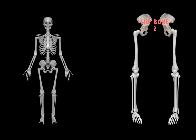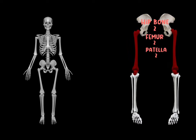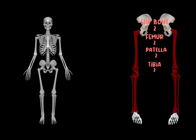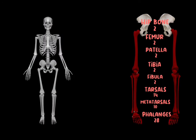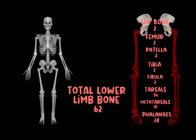Now we will discuss the bones of the lower limb. You have 2 hip bones, 2 femurs, 2 patellar bones, 2 tibiae, 2 fibulae, 14 tarsal bones, 10 metatarsals, and 28 phalanges.